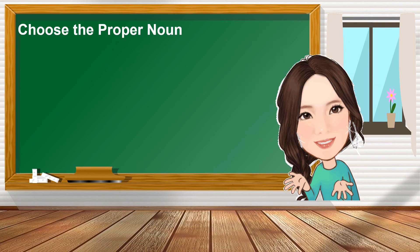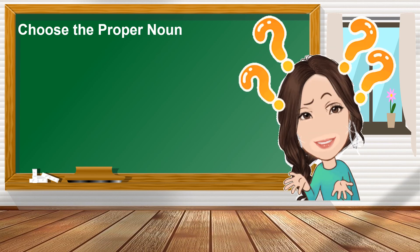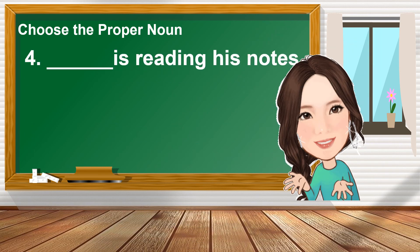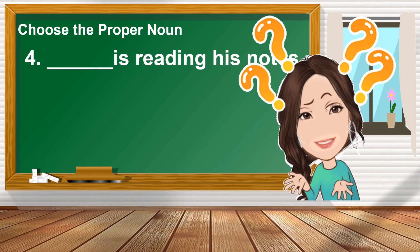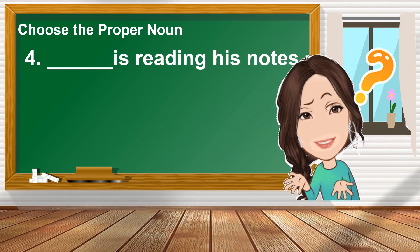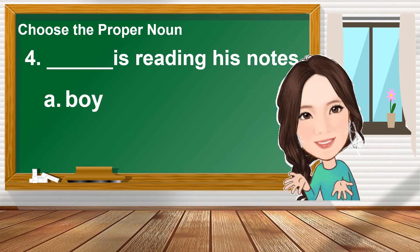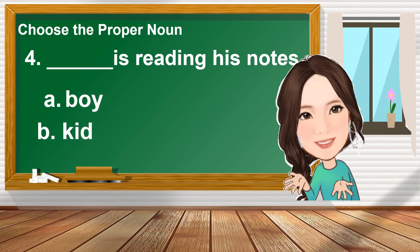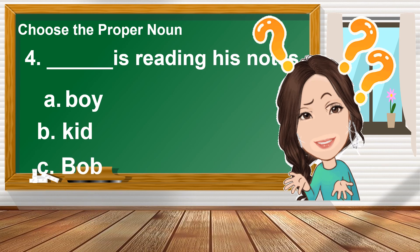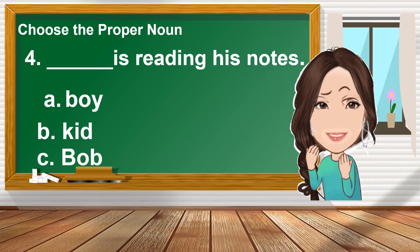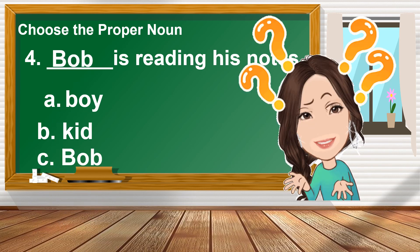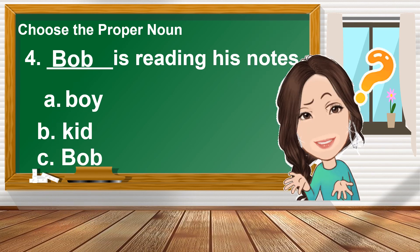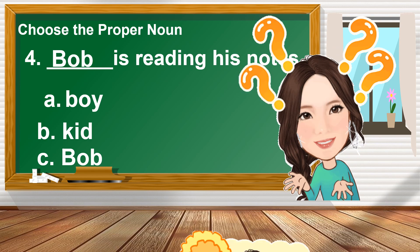Number four: choose the proper noun. Blank is reading his notes. A. Boy. B. Kid. C. Bob. The answer is letter C — Bob.